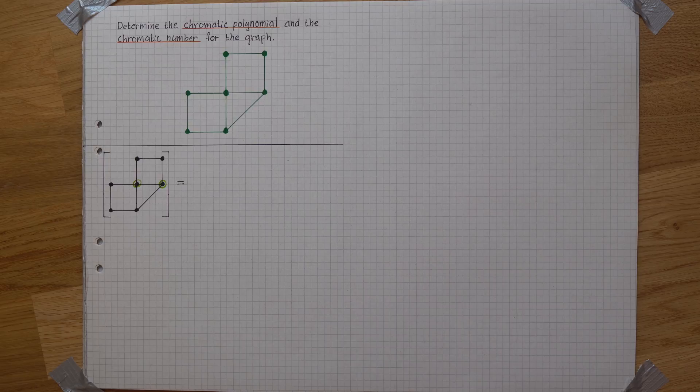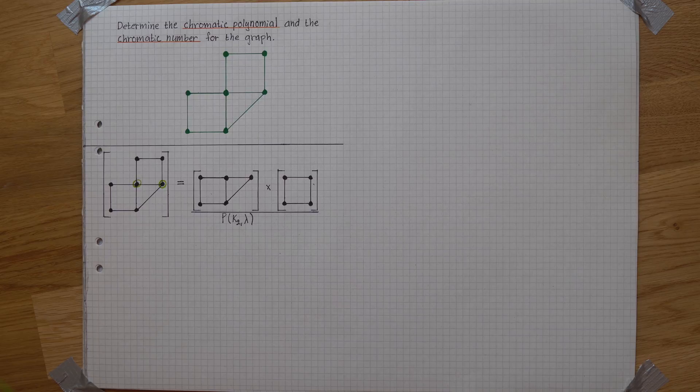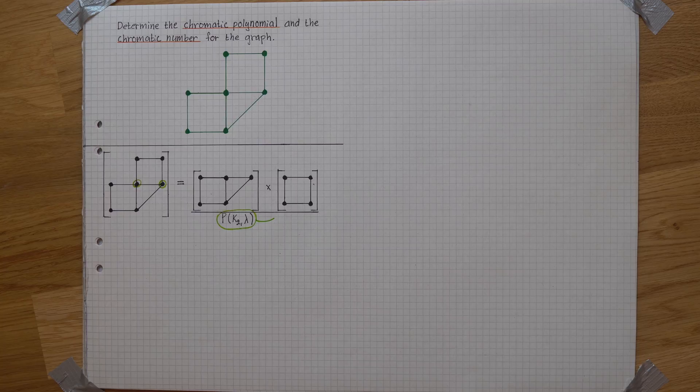This is equivalent to multiplying the two parts and dividing by P(K2, λ), where the two comes from the number of nodes that the graph is separated in. And the whole expression is equal to λ times λ minus 1.